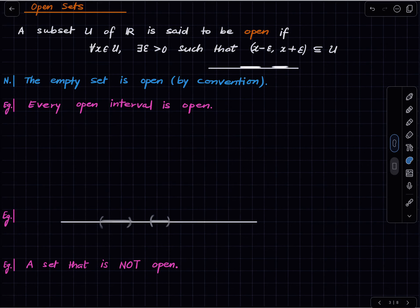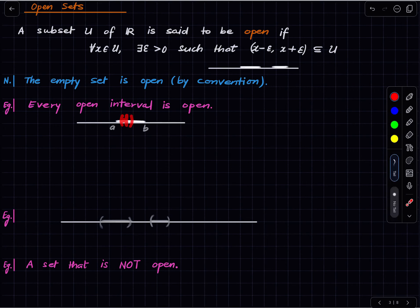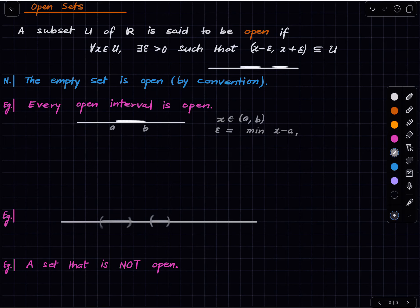Let me explain informally why every open interval is open. We have the real line and an open interval (a, b). If you pick any point here you can find a room around it which is contained in the open interval. Formally, if you pick a point x in (a, b), you can choose epsilon as the minimum of (x − a) and (b − x).